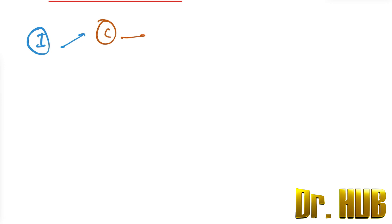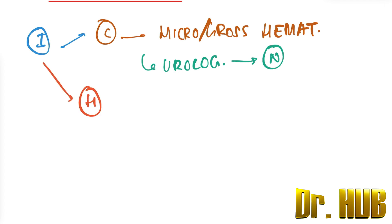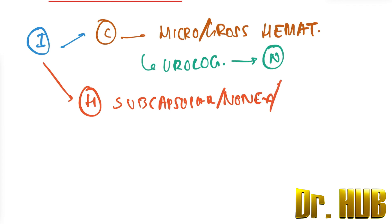Grade one: the types of injury are contusion and hematoma. For contusion (C), the description is microscopic or gross hematuria, and the urological studies are normal. For hematoma (H), it is subcapsular and non-expanding, and without parenchymal laceration.